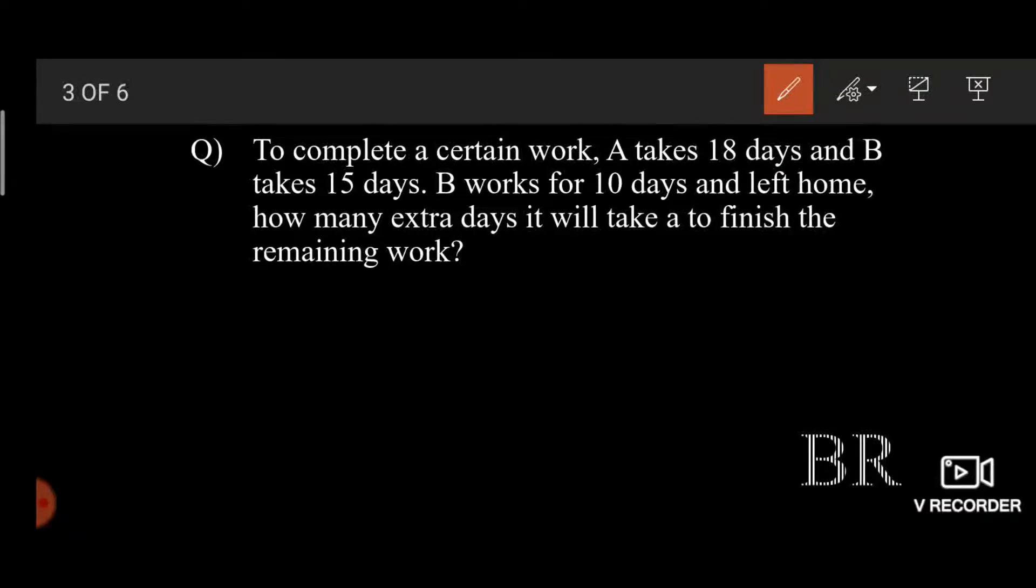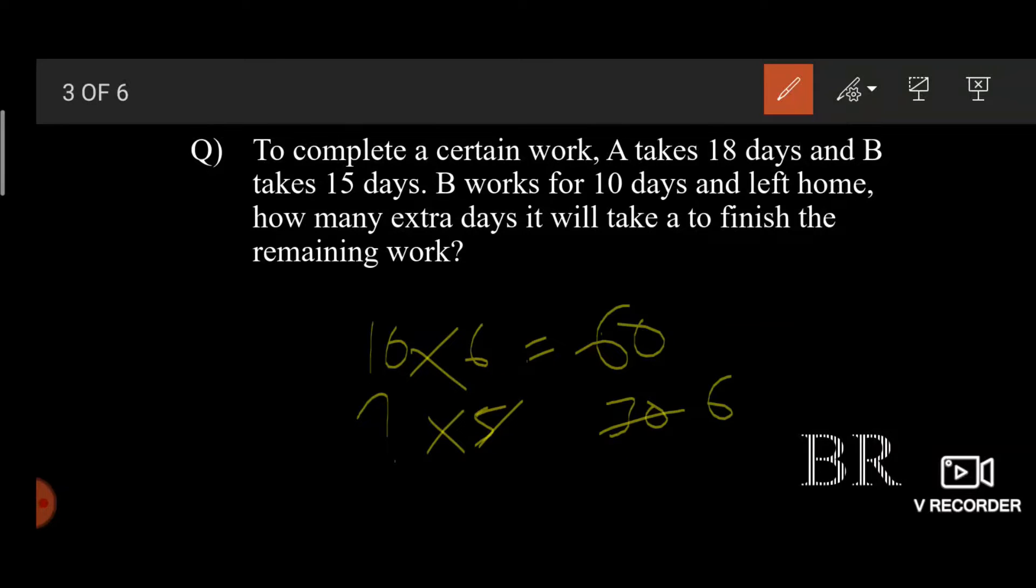So B works for 10 days, which means 10 into 6 doughnuts will give us 60. And 30 doughnuts are left, which must be done by A. A makes 5 doughnuts a day and how many days does A take to finish this? So when 5 goes this side, it becomes 30 by 5 and answer becomes 6.